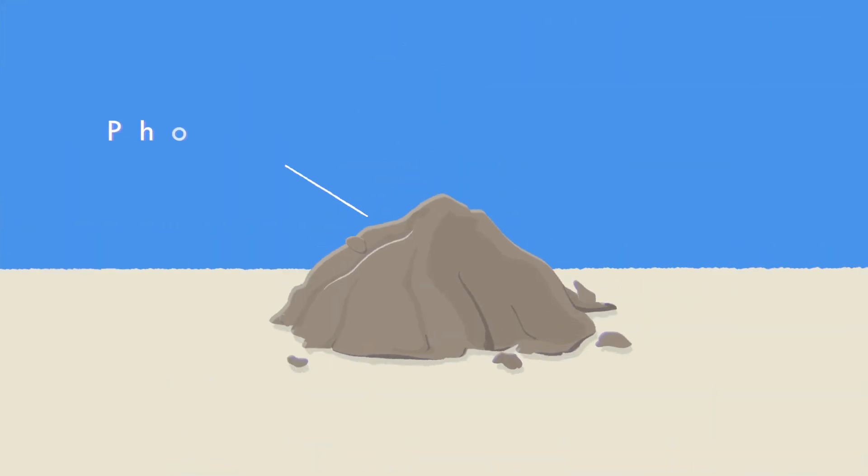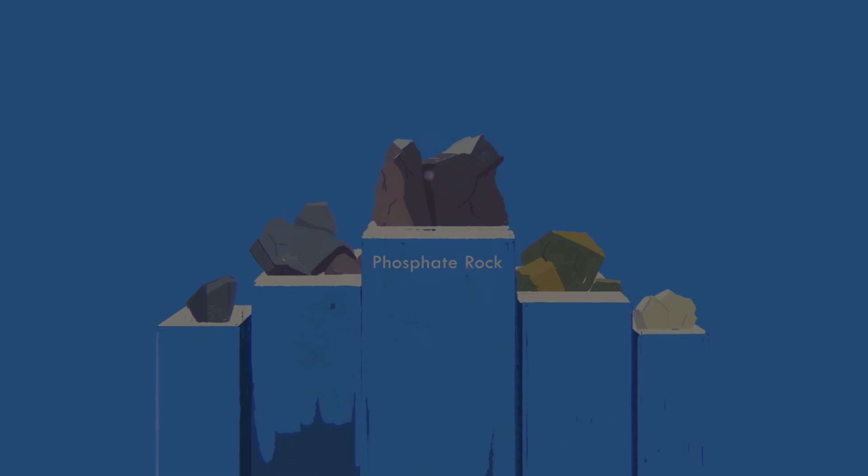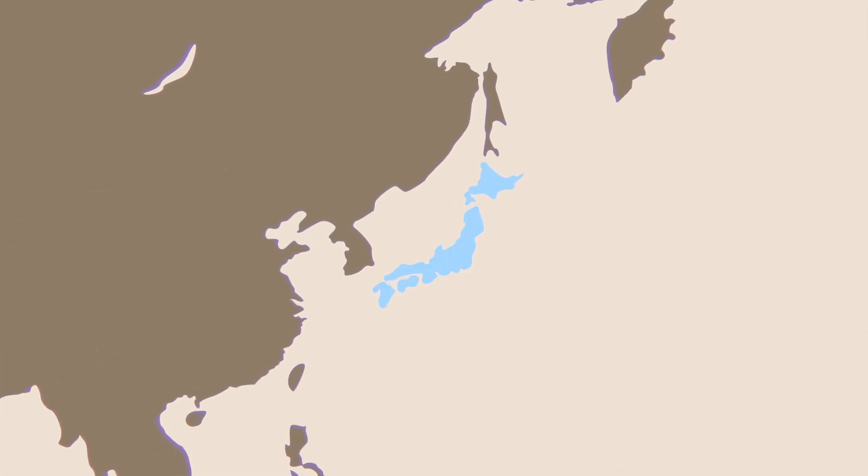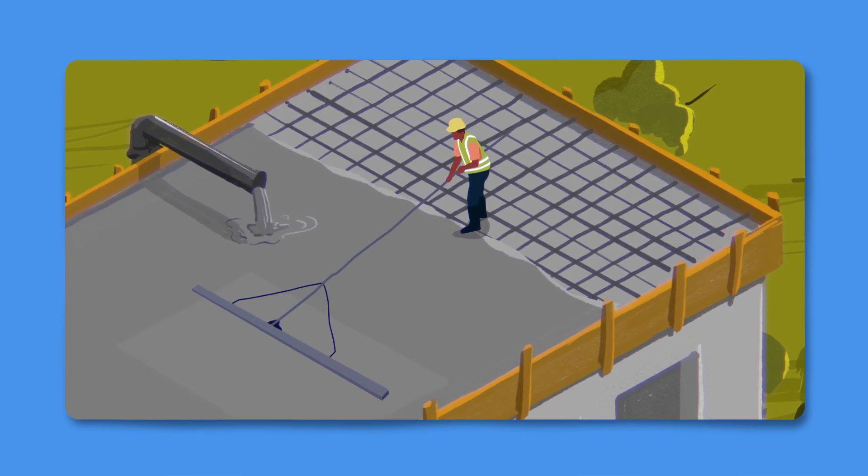This is phosphogypsum, or PG, a byproduct of making phosphate fertilizer from phosphate rock. For years, it's been put to use where possible, with Japan leading the way in the 1970s by reusing all of its PG for cement.